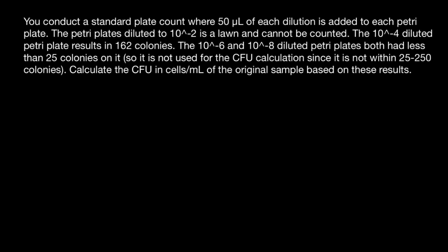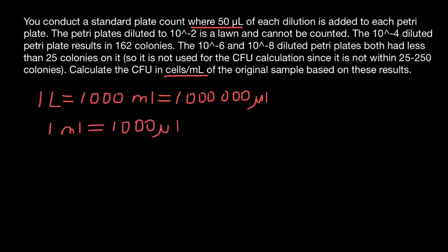First of all, I want to bring to your attention that we start our dilutions with 50 microliters, but we need to give an answer in cells per milliliter. So take a look. One liter equals 1000 milliliters and also equals 1 million microliters. As you see, 1000 milliliters equals 1 million microliters. That means that one microliter is 1000 times smaller than one milliliter. So one milliliter equals 1000 microliters. If we need to give an answer in milliliters but we start with microliters, let's convert milliliters to microliters.